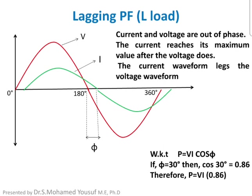The power equation is P = V·I·cos(φ). If we take the phase angle as 30°, then cos(30°) = 0.86, so the equation becomes P = V·I × 0.86. This means only 86% of the input power is transferred to the load, and the remaining 14% is considered losses. To compensate for this loss, we need to install capacitors or capacitor banks along with the inductive load.